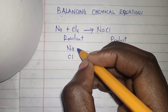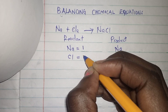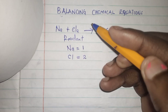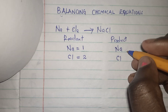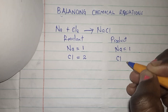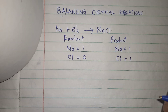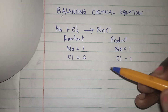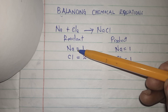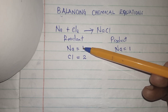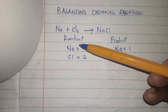We count the number of atoms: sodium we have one, chlorine we have two. On the product side we have one sodium and we also have one chlorine. So we want to balance this equation because it's not balanced — on the reactant side I have one sodium and two chlorine.